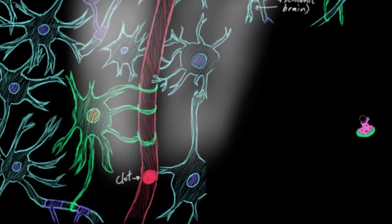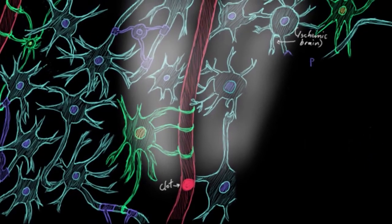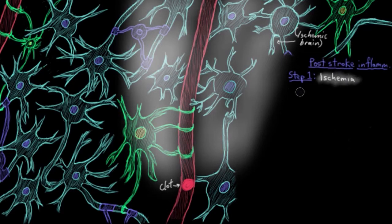Let's actually follow what happens with this inflammation from the start, from the initial ischemia, and we'll do this in steps. So step one, ischemia happens, and it leads to brain cell death, right?